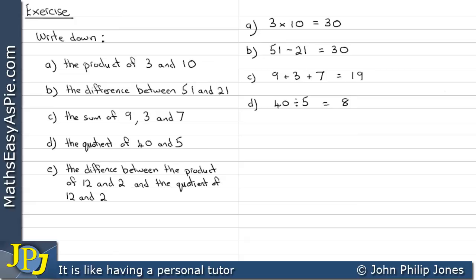Now if we look at E, it's asking us to find the difference between the product of 12 and 2 and the quotient of 12 and 2. Well, we need to do this in a number of steps. Step 1, what we're going to do, we're going to find the product of 12 and 2, which is quite simply, we take the 12 and we multiply it together. As you can see here, 12 times 2 is 24. The next step, well, we need to find the quotient of 12 and 2.